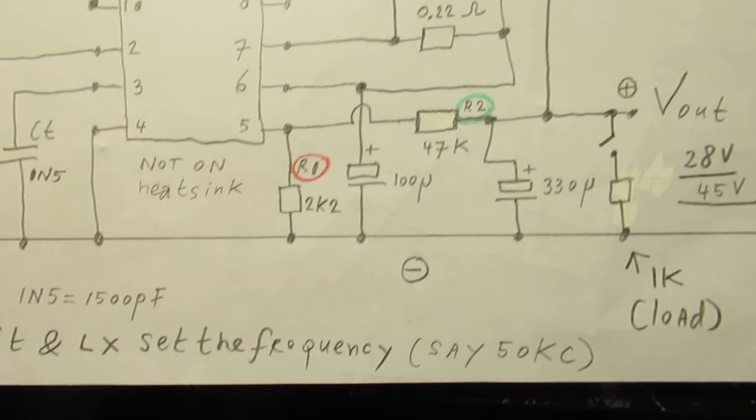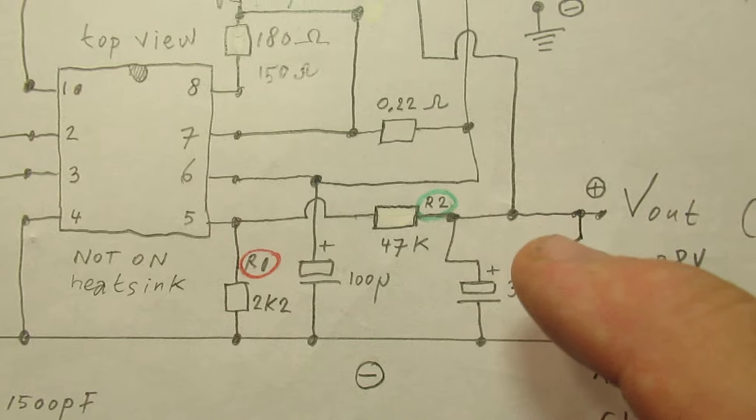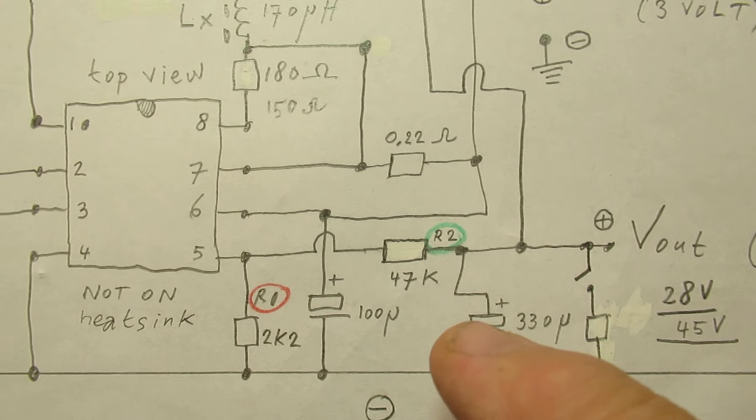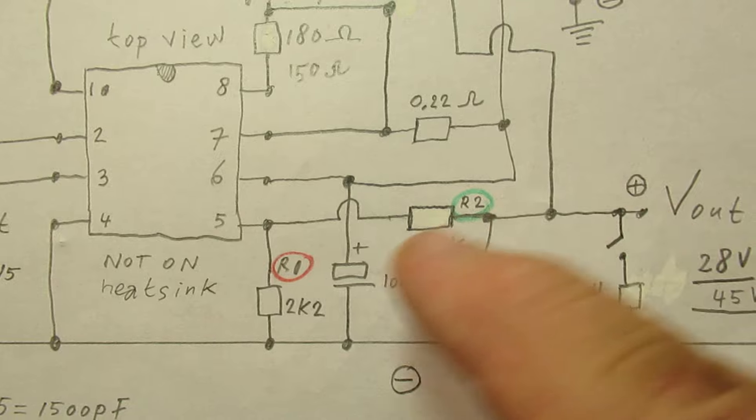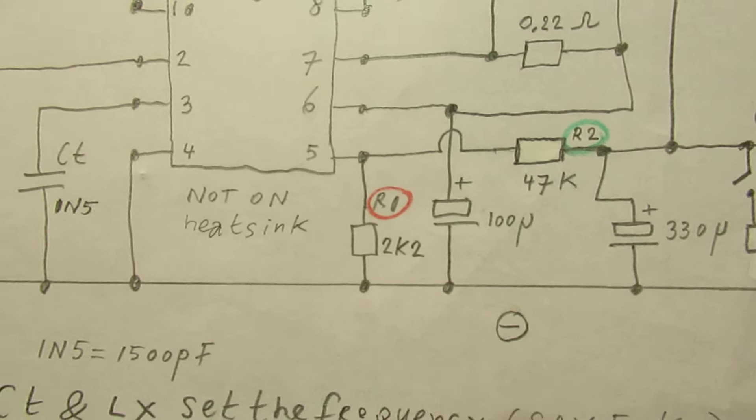The relation between R1 and R2 is very important. It sets the output voltage.